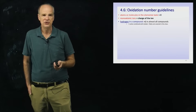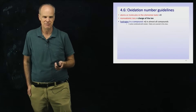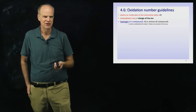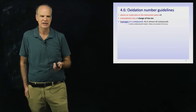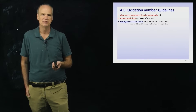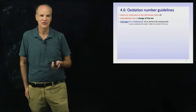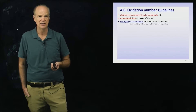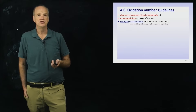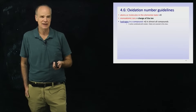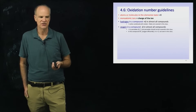Whenever you see hydrogen in a compound — not hydrogen by itself as an element, but hydrogen within a compound — most of the time its oxidation number will be set to plus one. In small print are the times when it isn't plus one, but in this class we're not going to worry about that. So you should assume that whenever you see a hydrogen in a compound, its oxidation number is plus one.